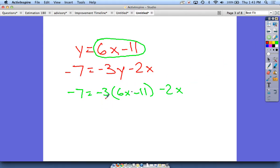So we've got the distributive property. Simplified down, that would be negative 18x, and then negative 3 times negative 11 would be plus 33 minus 2x equals negative 7.